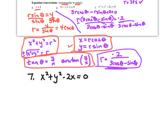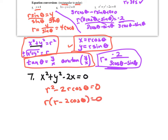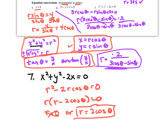For example 7, notice the x squared plus y squared in the equation — replace it with r squared. This becomes r squared minus 2r cosine theta equals 0. Factor out r: r times (r minus 2 cosine theta) equals 0. So r equals 0 or r equals 2 cosine theta. We ignore r equals 0 since that's just the pole, and our polar equation is r equals 2 cosine theta.